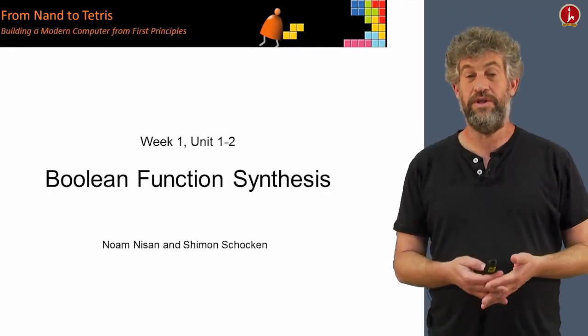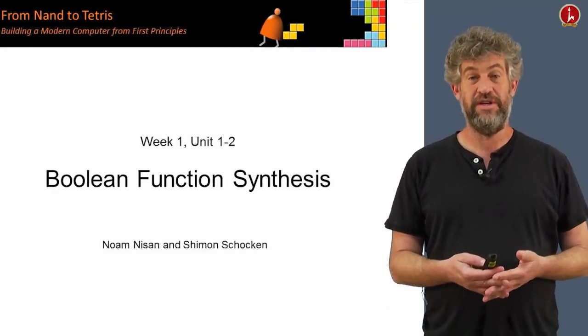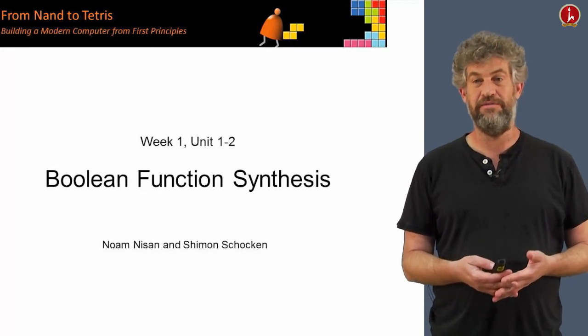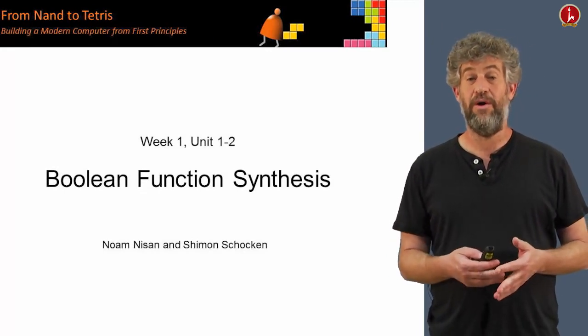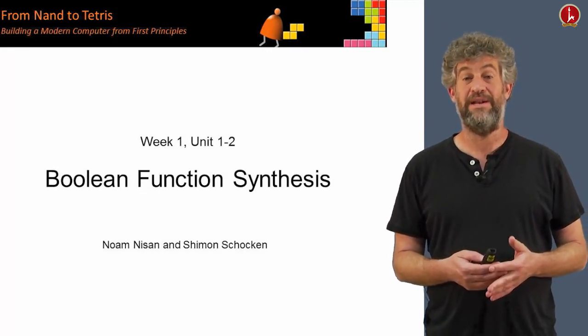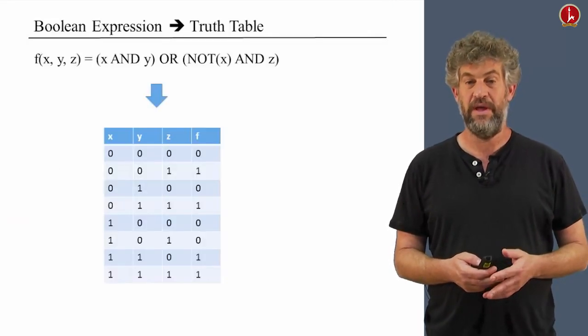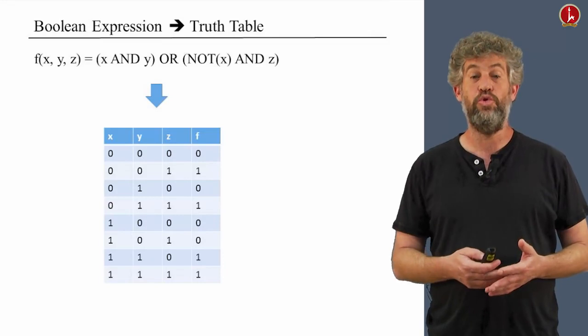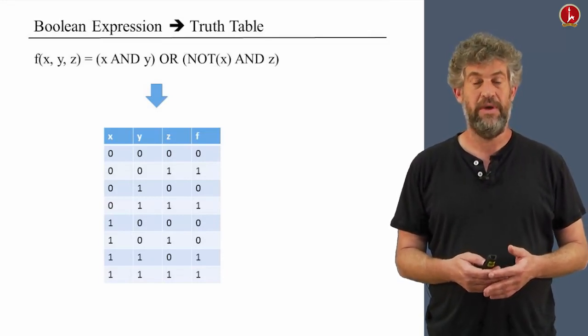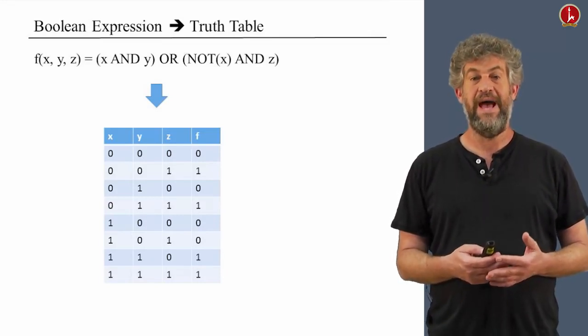So in the last unit, we talked about Boolean functions, Boolean values, Boolean algebra, and Boolean formulas. What we want to do now is talk about how we can construct Boolean functions from more primitive operations. We've already seen two ways to represent a Boolean function: Boolean expression and the truth table.